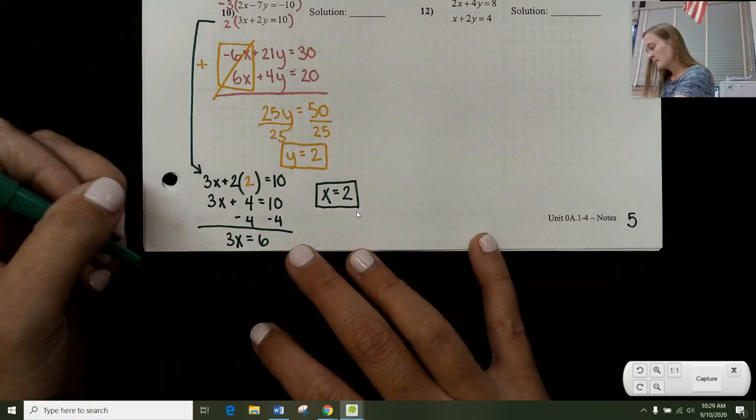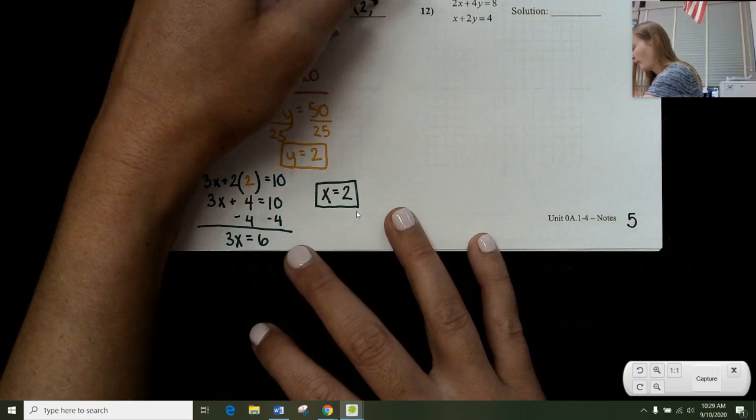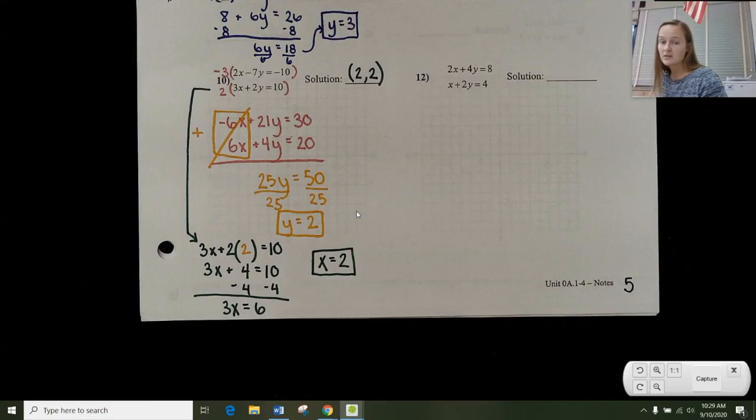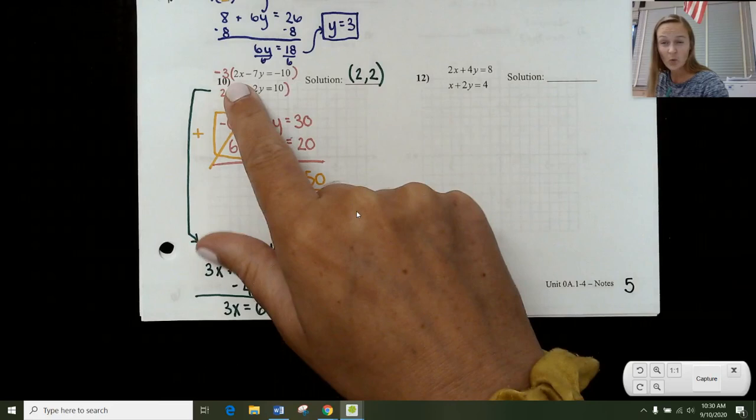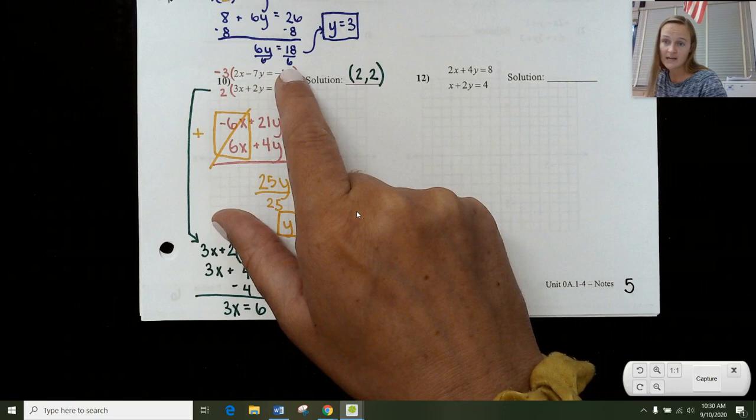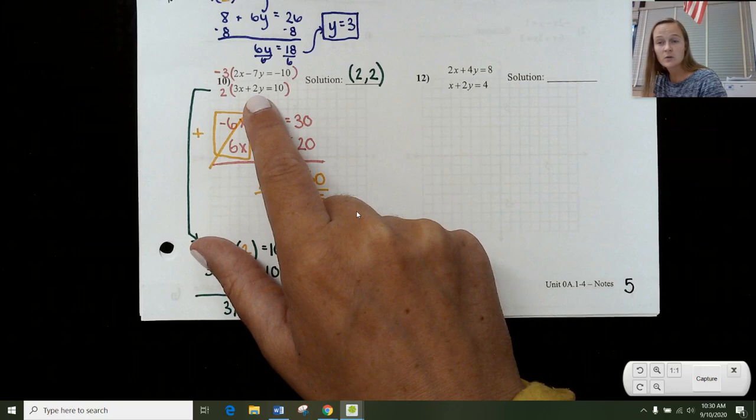So now I know my full solution is just 2 comma 2. And at this point, you go back and you check your answer by plugging in 2 comma 2 into both sides. So this would give me 2 times 2 is 4 minus 7 times 2 is 14. So 4 minus 14 equals negative 10. Perfect. 3 times 2 is 6. 2 times 2 is 4. 6 plus 4 is 10. Perfect.